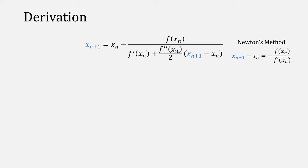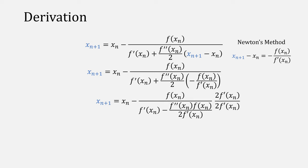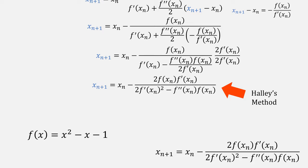There actually is a way to get rid of this term. Recall our Newton's method function. If we replace that subtraction with the Newton's step, we can come up with this form. Then do some cleanup, and we get Halley's method.